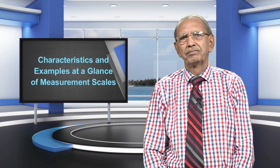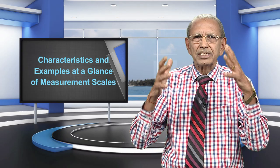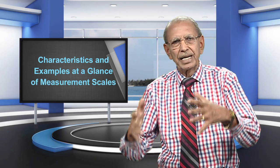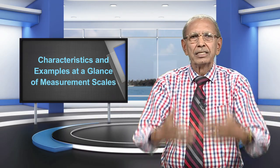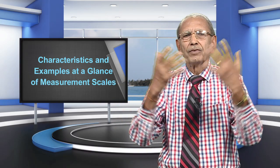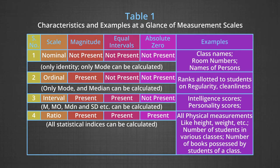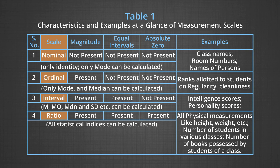Now I am going to show you a summary table which presents the characteristics and examples of measurement scales at a glance. This will give you a summary view of the entire module. The table has several columns: serial number, scale name, magnitude, equal intervals, absolute zero point, and examples. We will view all four measurement scales under these headings.